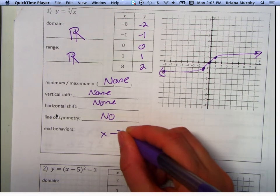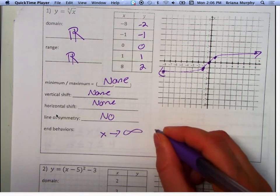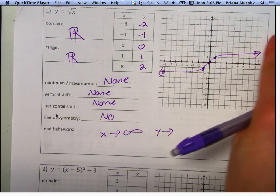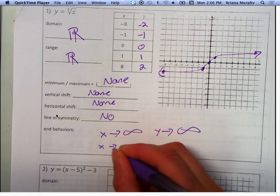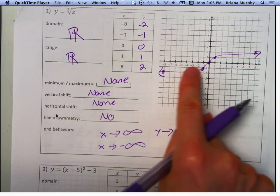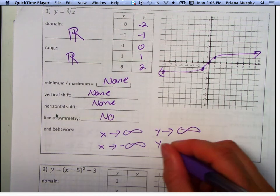End behavior. As X approaches infinity, what does Y approach? Infinity. Infinity, right? Keeps going up. As X approaches negative infinity, so that's to the left, what is Y approaching? Negative infinity. Good.